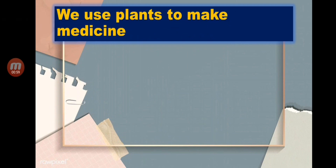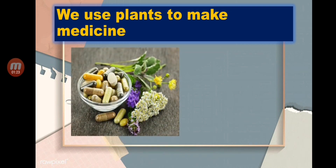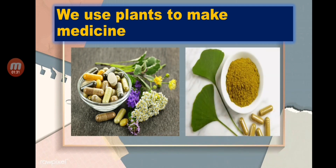We also use plants to make medicine — not only for food, making houses, boats, bags, baskets, and clothes, but also we can use plants to make medicine. Here are examples of plants we can use to make medicine. All of these are called herbal plants.